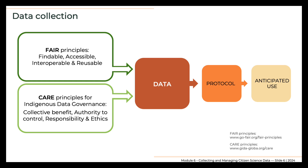Collecting data involves getting information from participants into usable data files. To do this efficiently, you'll need to determine how observations will be made and how the resulting data will be recorded and organized. The first step is to identify what data to collect, which should be influenced by the anticipated uses of the information. Keep in mind the FAIR principles within the open data movement — findable, accessible, interoperable, and reusable — and the CARE principles for Indigenous data governance — collective benefit, authority to control, responsibility, and ethics.